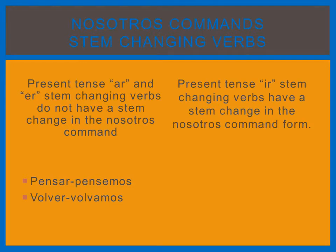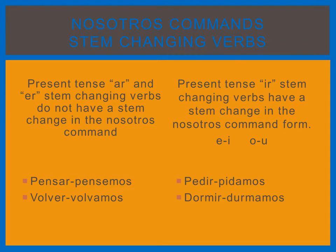Present tense IR verbs do have a stem change in the nosotros command form. The stem change is E to I and O to U — there is no I-E or U-E stem change. Pedir becomes pidamos, and dormir becomes durmamos. If this group of stem changers sounds familiar, it is because they are the same group as the preterite stem changers. Only IR verbs that have a stem change in the present tense require a stem change in the preterite tense and also in the nosotros commands.